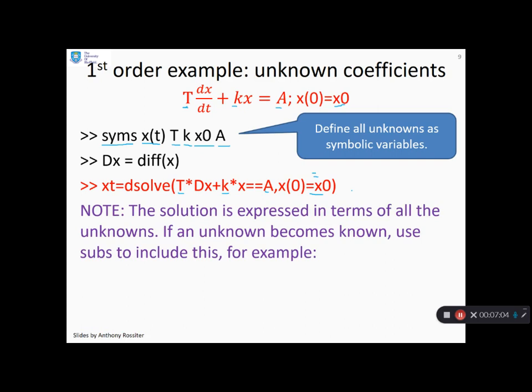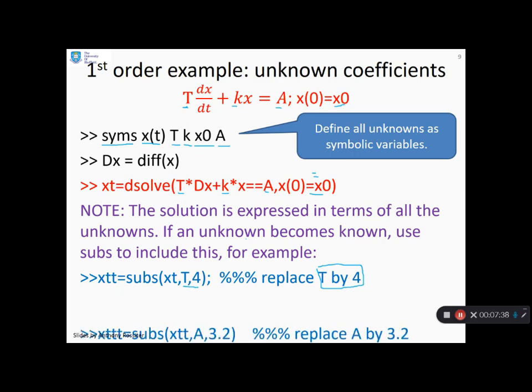So the solution that comes out will be expressed in terms of all the unknowns and later it might be that an unknown becomes known. Somebody says, oh, by the way, I happen to know this variable. Well, you can still use that. Basically, you use the subs command. So here's an example. What happens if somebody comes along and says, I now know that capital T is 4. Well, all I do is I use subs and you'll see I say substitute into my solution xt wherever you find a capital T put 4 and that will do it for you.